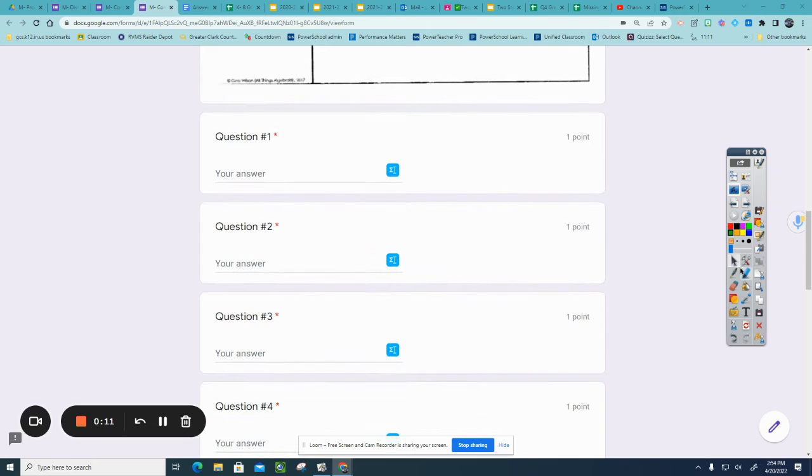Question number one is 15 minus 8x plus 3 minus x. So I'm going to rearrange this so that all of my like terms are together. Negative 8x minus x plus 15 plus 3. Then I'm going to combine the terms that are alike.